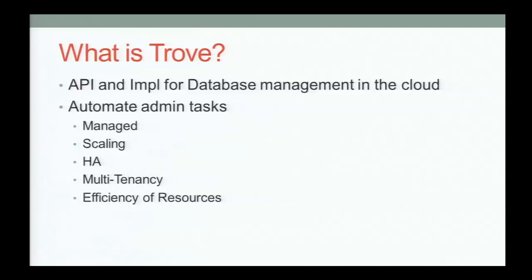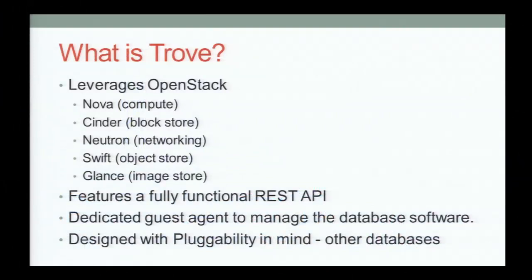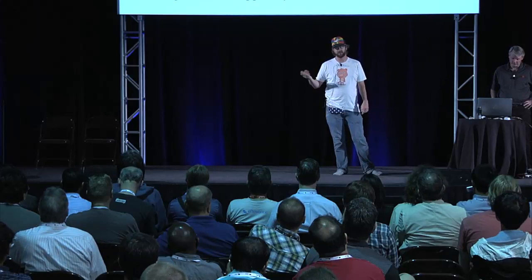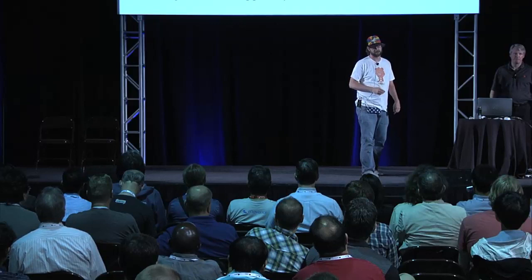You don't want to deal with someone else clobbering your data store in a multi-tenancy environment. We leverage OpenStack as a black box — you don't have to run your own infrastructure. You can stand up Trove and talk to an existing OpenStack infrastructure. We use Nova for compute, Cinder for block storage volumes, Neutron for networking, Swift for backups, and Glance for images. We have a custom image that typically already has a specific data store installed on it.